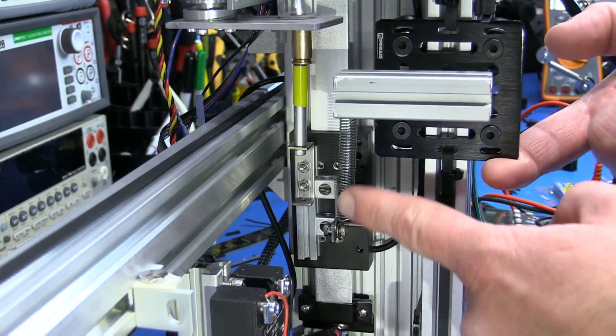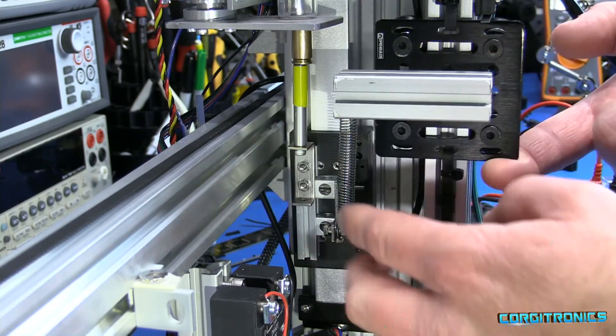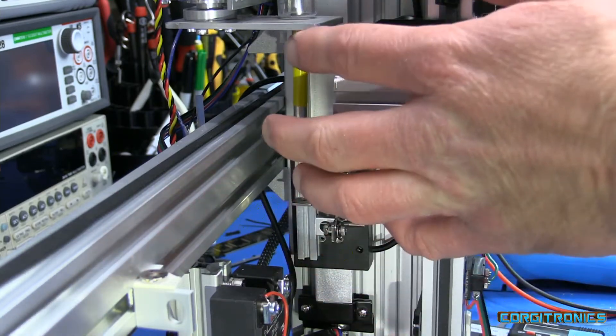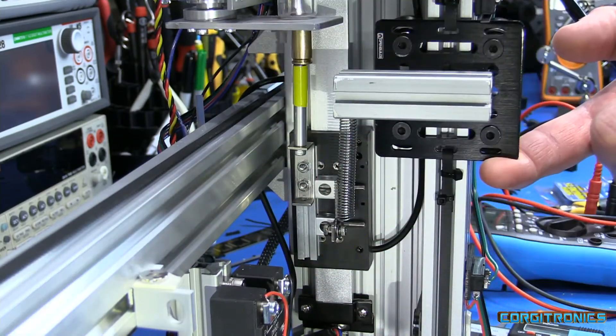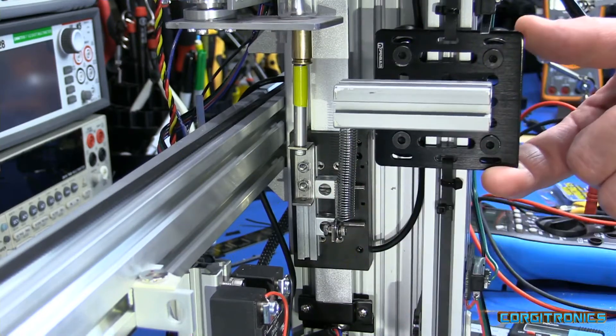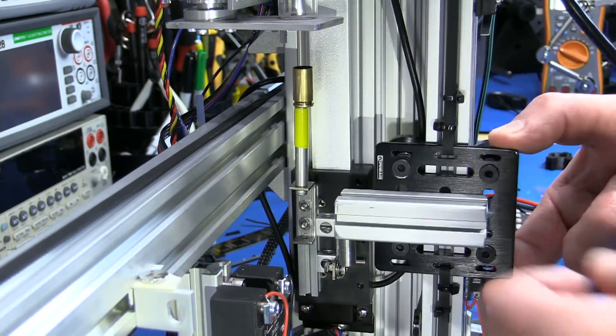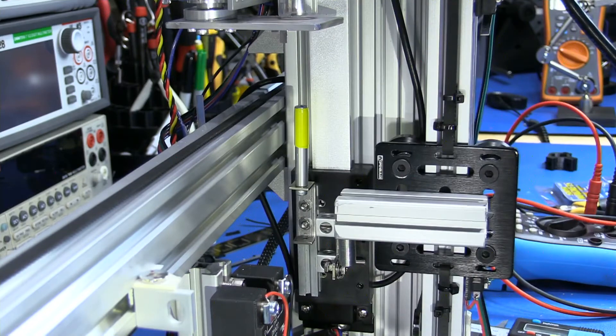When the carriage reaches its limit switch right here, the system then knows that it's done with travel and the spring has provided light pressure to keep the case lined up nicely against the stop plate. We can now take a reading and know how tall our case is.